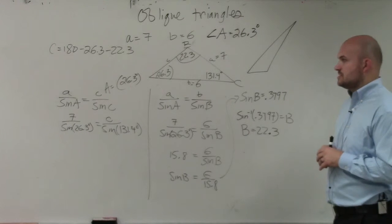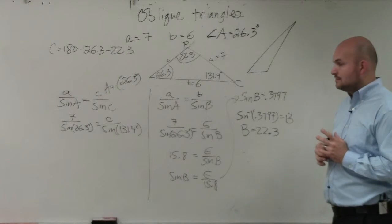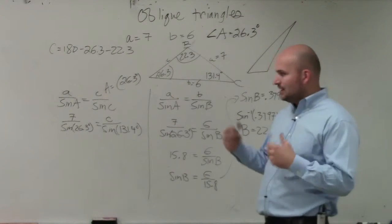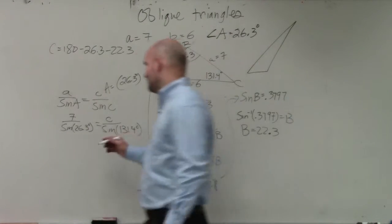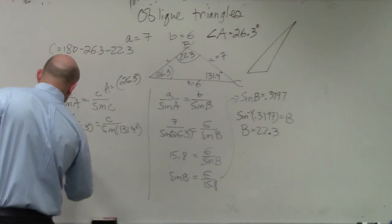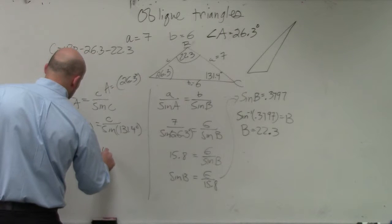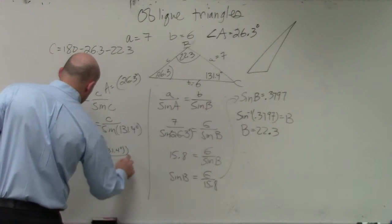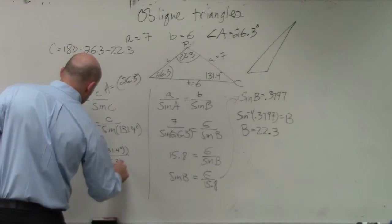And therefore, again, you guys could do cross multiplication and do all that fun stuff. But when you do cross multiplication or whatever else, you guys get c equals 7 times the sine of 131.4 degrees divided by the sine of 26.3 degrees.